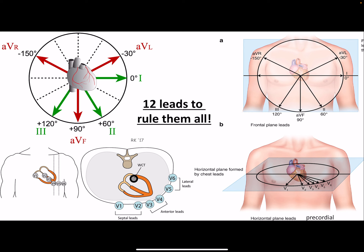We have 12 leads in total: six are frontal leads and six are precordial (horizontal) leads. Moving clockwise we have Leads I, II, and III, then aVL, aVF, and aVR — L for left, F for foot, R for right. The precordial leads V1 through V6 are positioned on the front of the chest near the sternum, moving laterally.